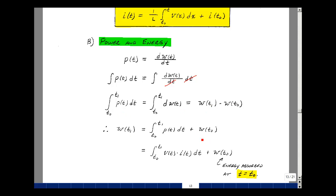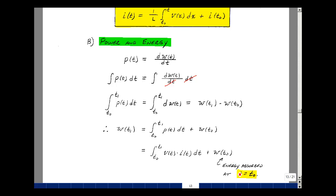I could solve for the value of the energy absorbed by the inductance at some time in the future. I've got the integral of power dt. What's power? It's voltage times current. This is the initial condition or the energy that's absorbed by the inductance at time T equals T0.